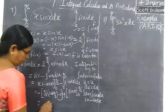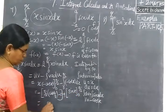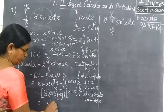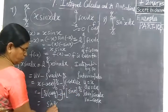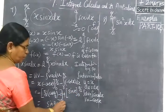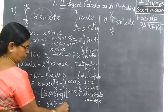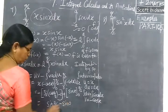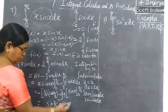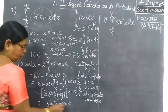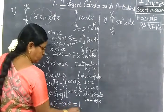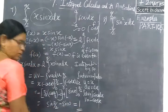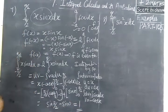Then for the remaining term: sin(x) evaluated from 0 to 5π/2. At the upper limit, sin(5π/2) equals 1. At the lower limit, sin(0) equals 0. So this equals 1.